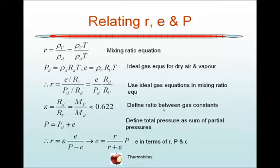You can then rearrange that equation and re-express that in terms of the vapour pressure. So e is equal to r over r plus epsilon times P, and I'll leave that as an exercise for you to do to show that that's the case.